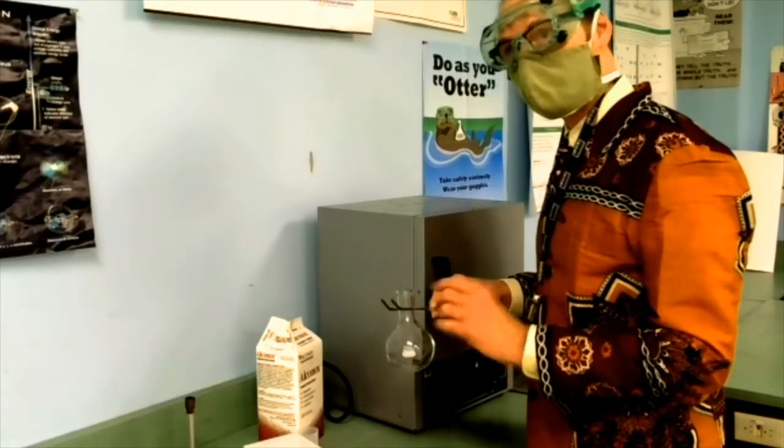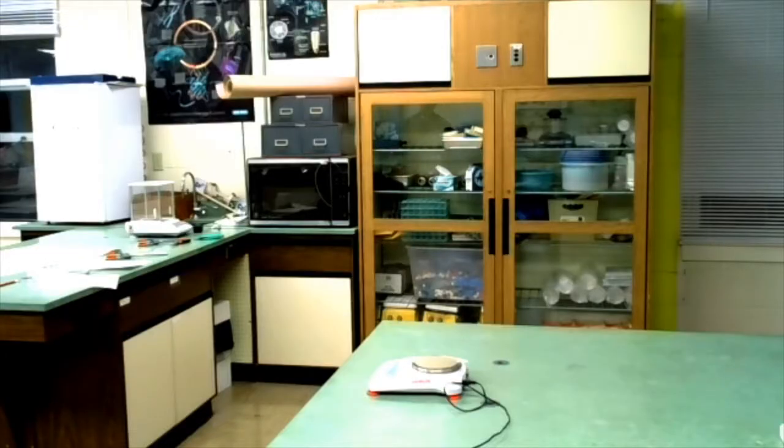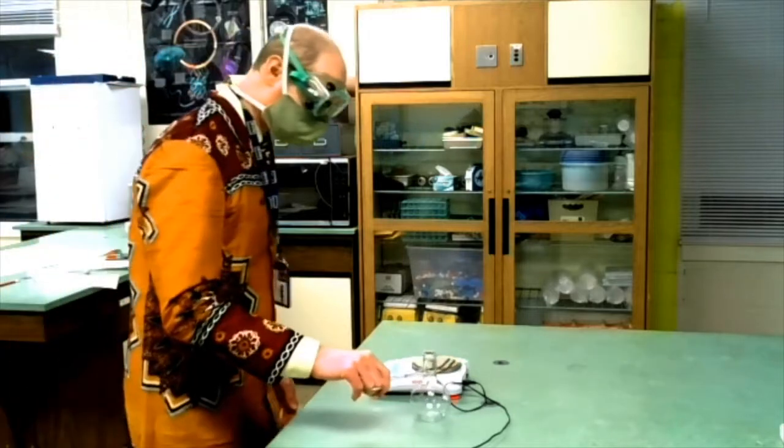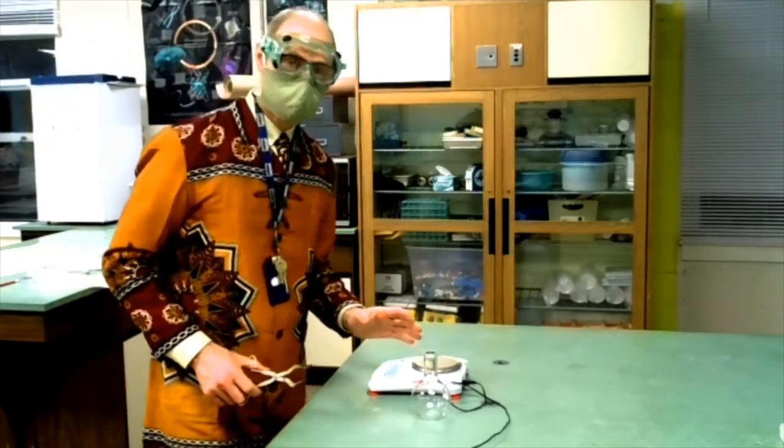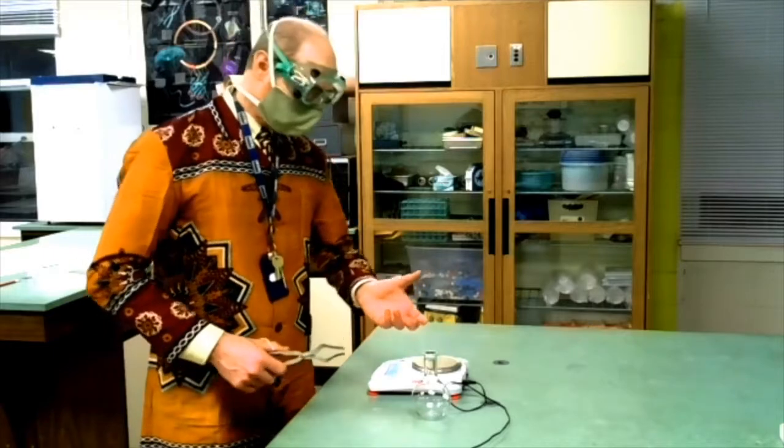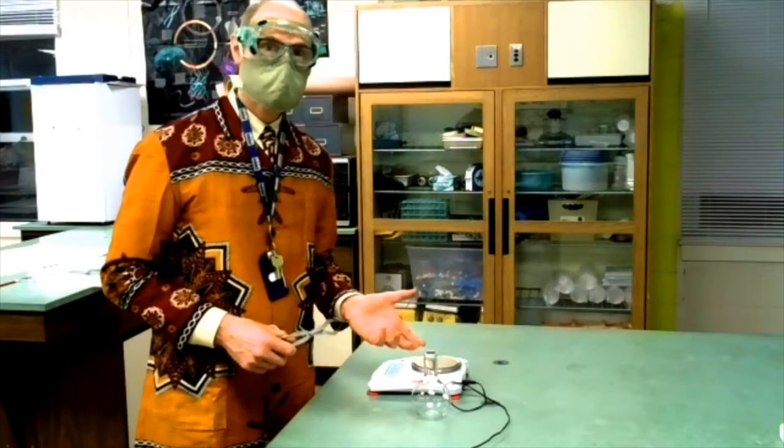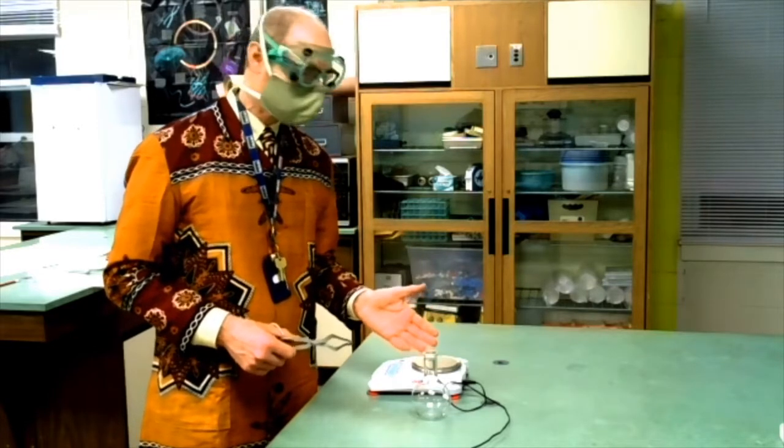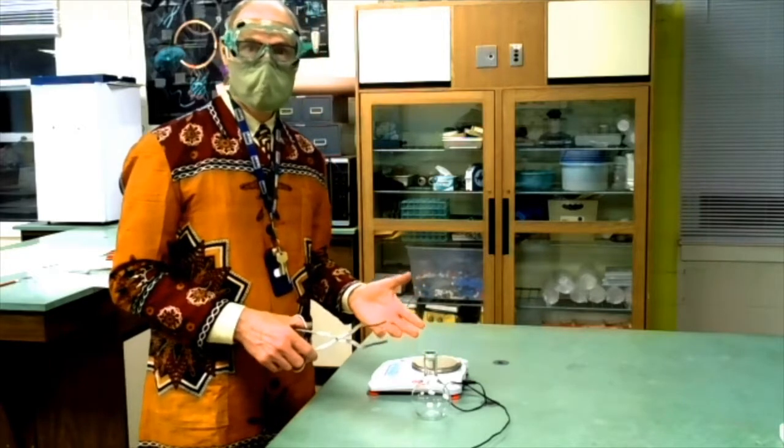Now I'm going to let the flask cool down to room temperature. This is necessary for correcting the mass of the air, because in our calculations we're going to have to subtract the mass of the air from the mass of the assembly, and that's only going to work if we have the right temperature.